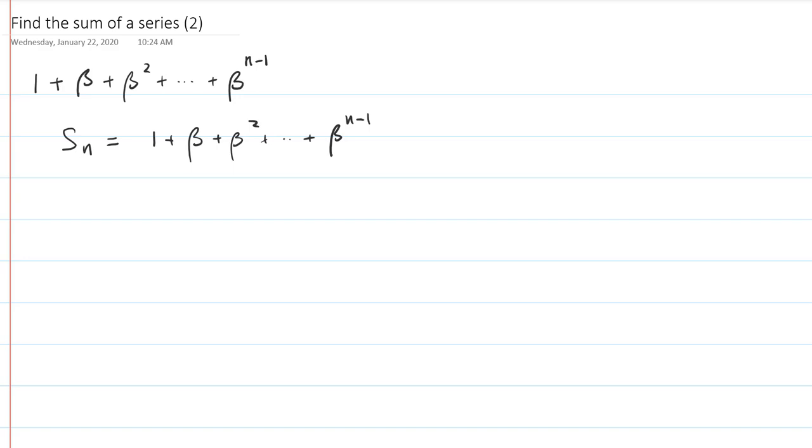Like the previous example, we are going to first find the recurrence relation. And we can easily see that Sn is equal to Sn minus 1 plus beta to the n minus 1. Now, this is the same recurrence relation as the next one. For this one, you can see n goes from 2 and 3 like this.